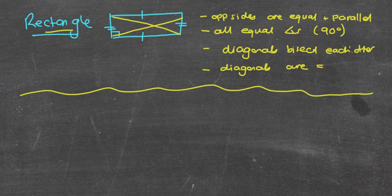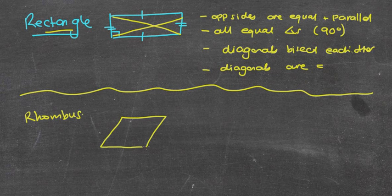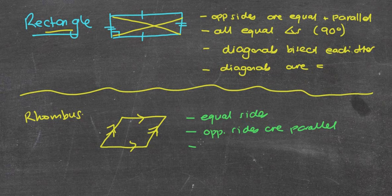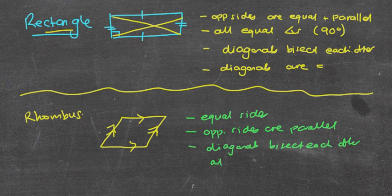Now let's do a rhombus. A rhombus is kind of like a square, but pushed over. It has basically the same properties as a square except for the angle one. So we have: all sides are equal, opposite sides are parallel, and diagonals bisect each other at 90 degrees. Pretty much all the same properties as a square.